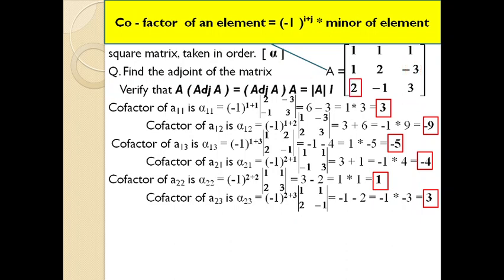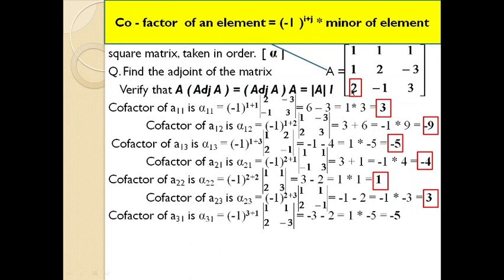Moving to the third row. Element 2 is in the third row, first column: α₃₁ = (−1)^(3+1) × minor. The remaining submatrix is [1, 1; 2, −3]. Cross-multiplying: 1×(−3) − 2×1 = −3 − 2 = −5. Since (−1)^(3+1) = (−1)^4 = 1 (even), the cofactor α₃₁ = 1 × (−5) = −5.